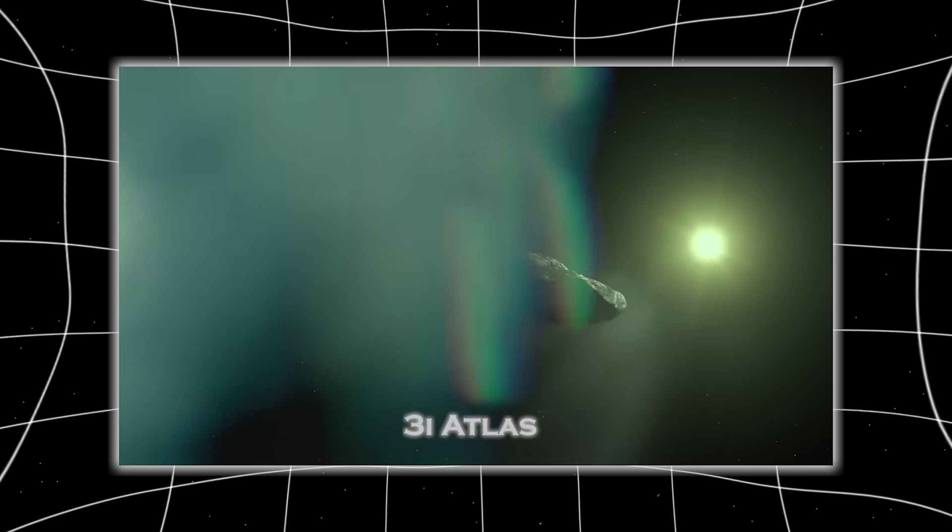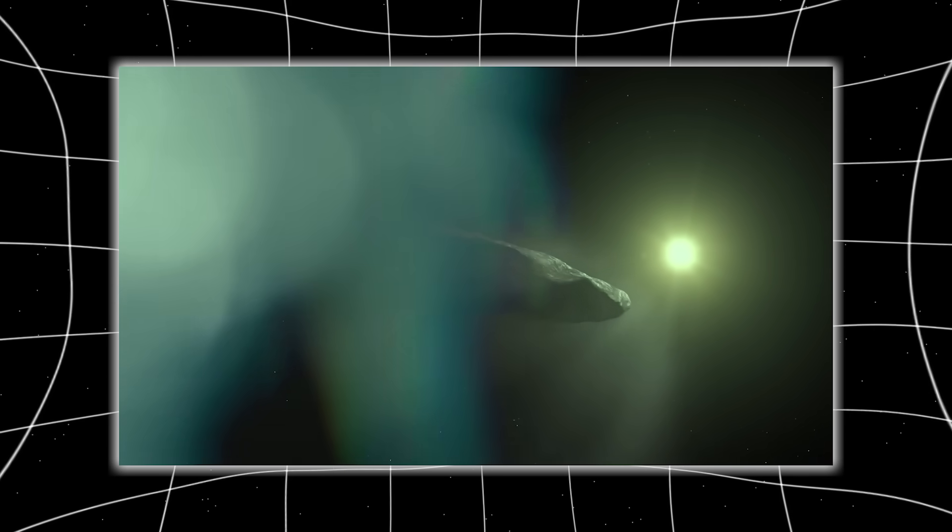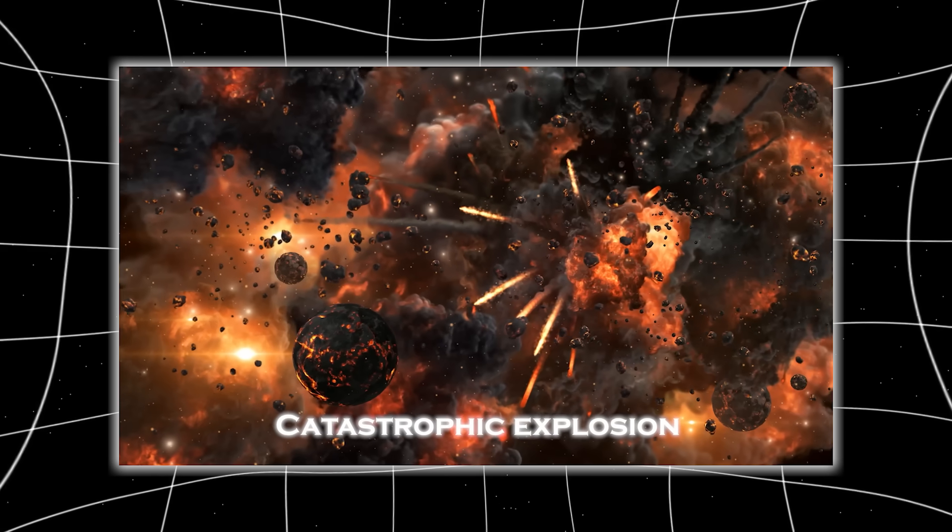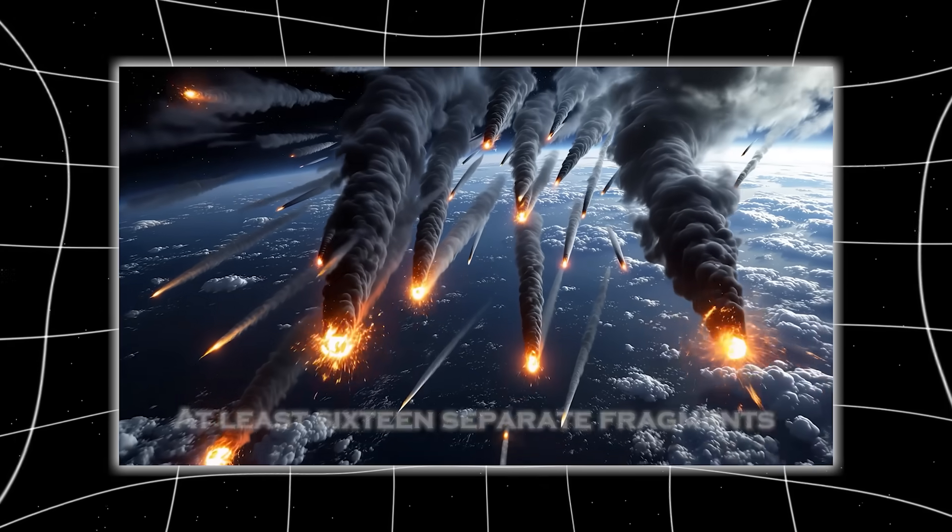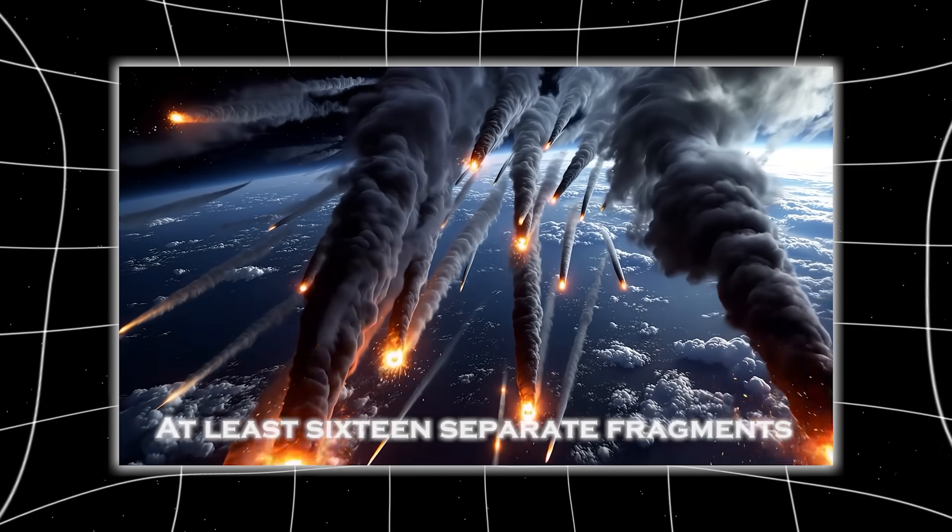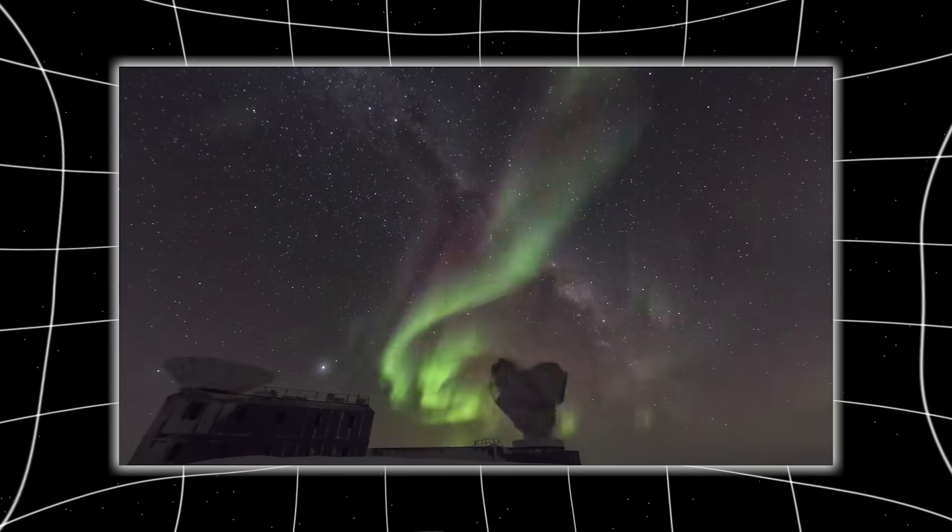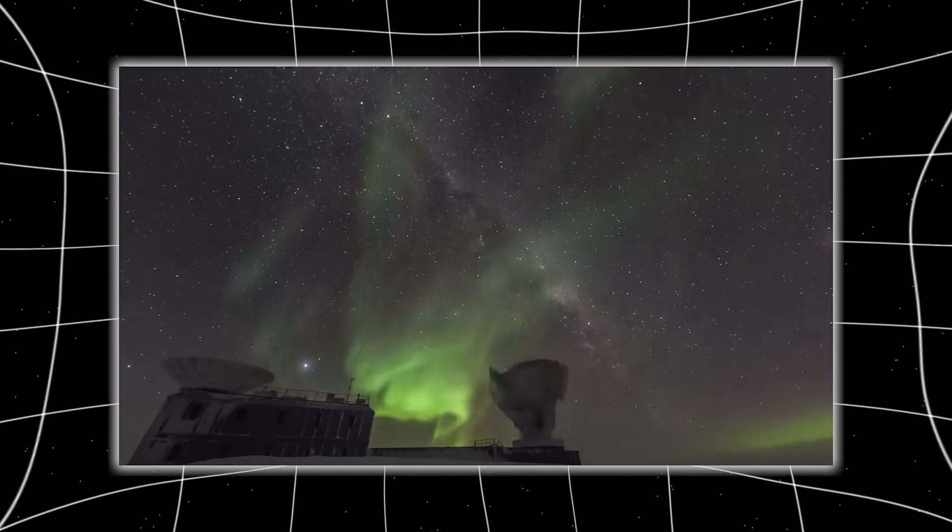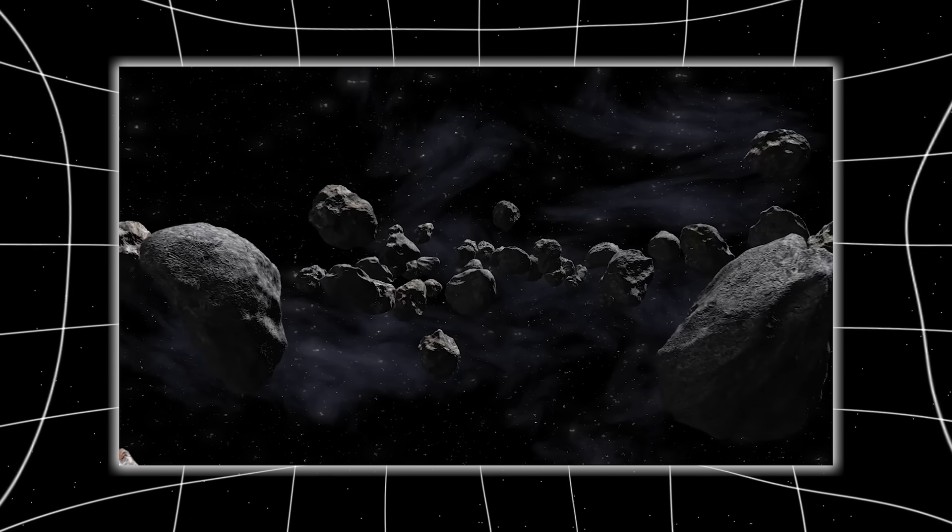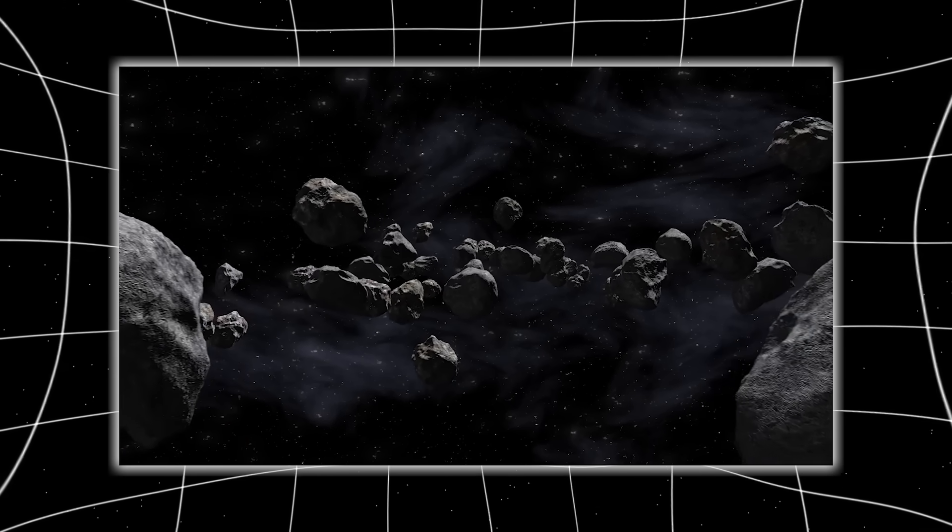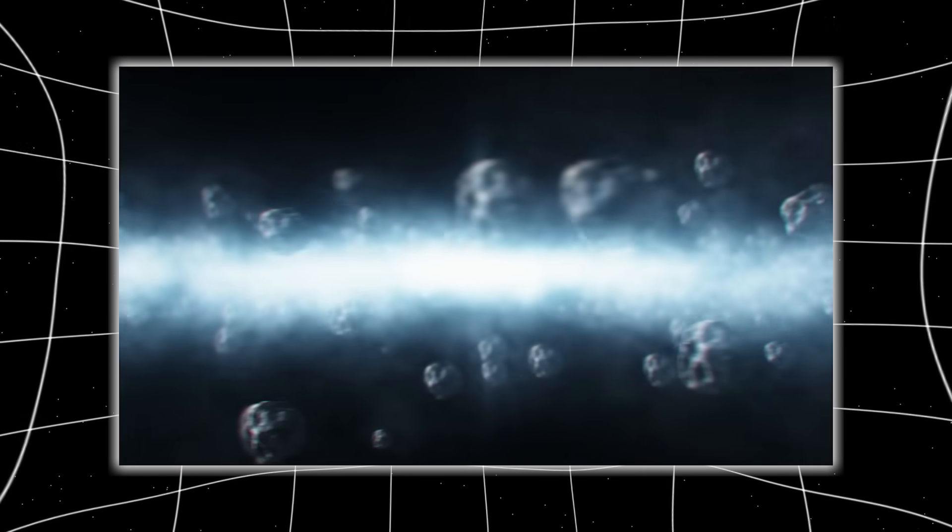3I Atlas, the third interstellar object ever discovered, may have undergone a catastrophic explosion, shattering into at least 16 separate fragments somewhere around perihelion. And the strangest part is this: the evidence doesn't look like a natural breakup. It looks structured, organized, almost controlled.